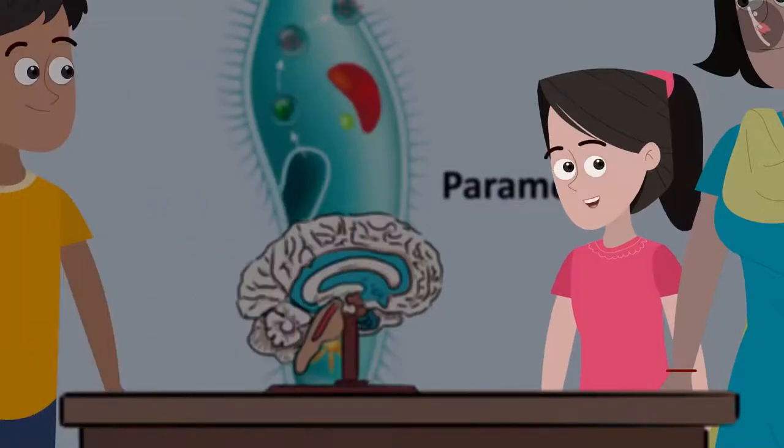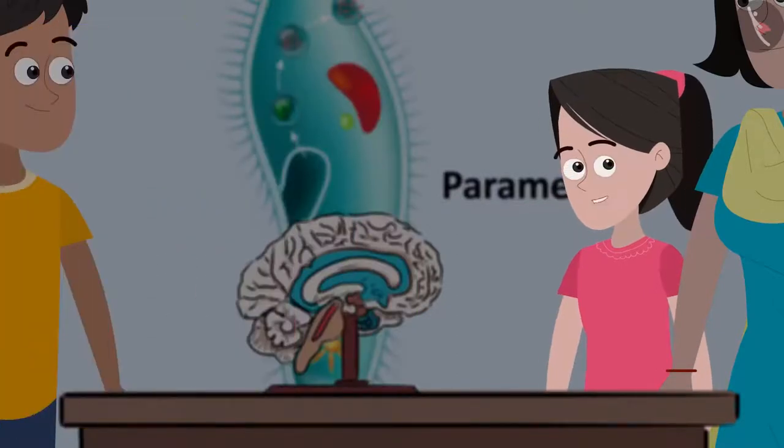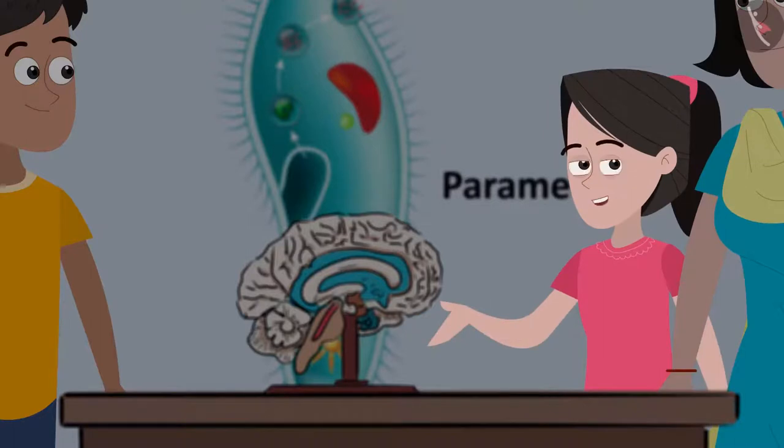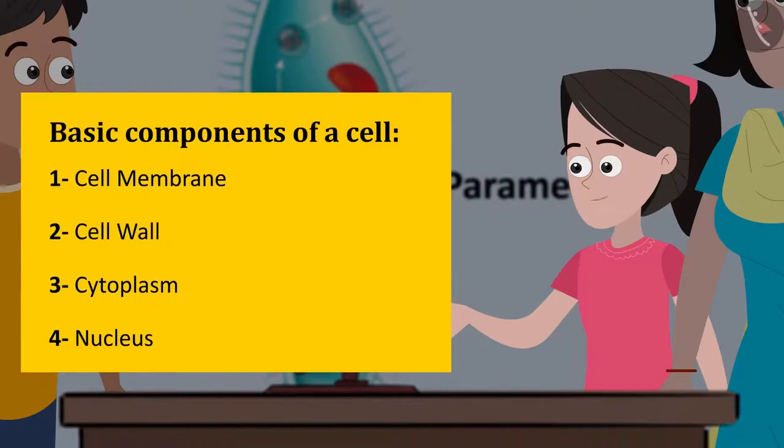Friends, you just listed out the components that are present in plant and animal cells. Can you refer to page number 93 to 96 of your textbooks and list out the functions of the following? The basic components of a cell are cell membrane, cell wall, cytoplasm, nucleus.